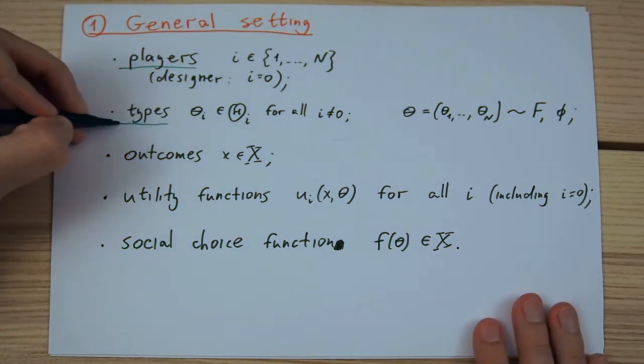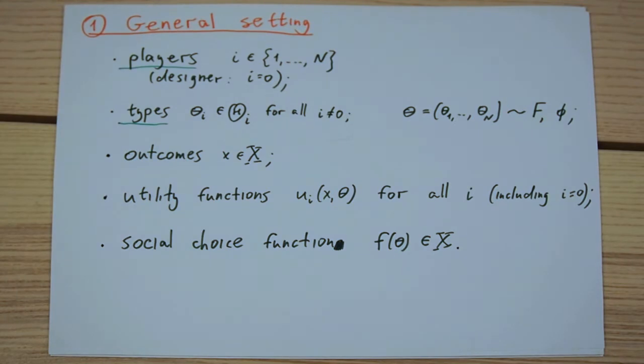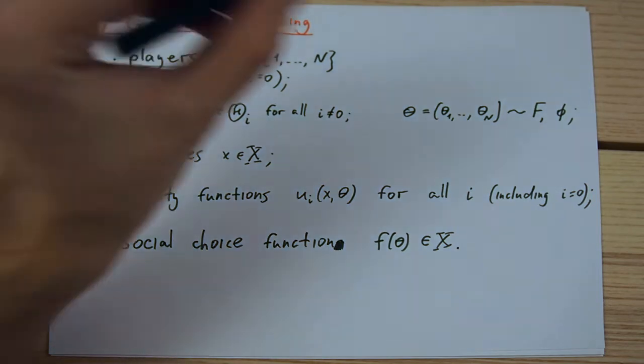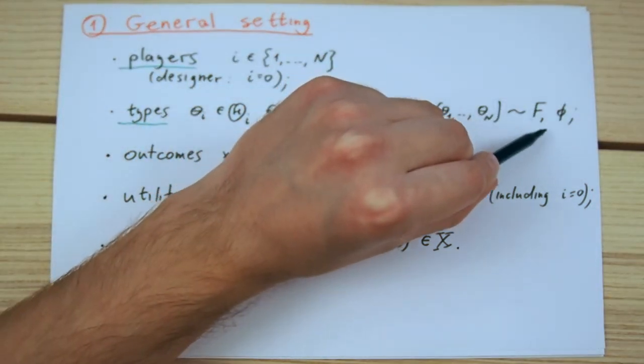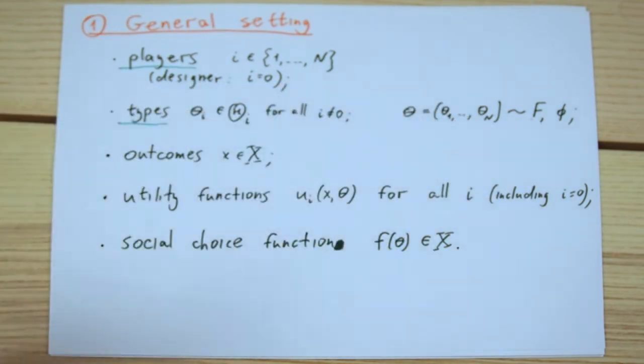Every player except for the designer is endowed with a privately known type. The profile of all players types is distributed according to some joint distribution with cumulative distribution function F and a probability density function phi.